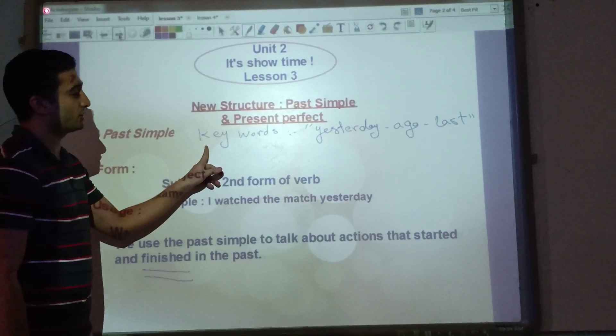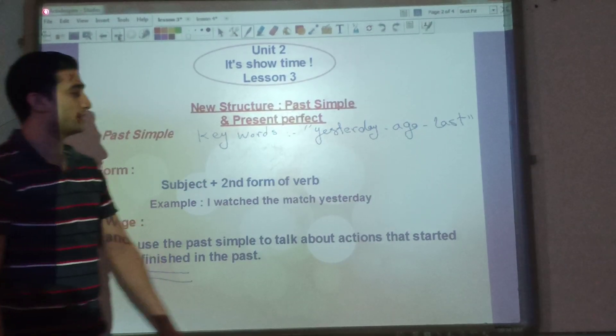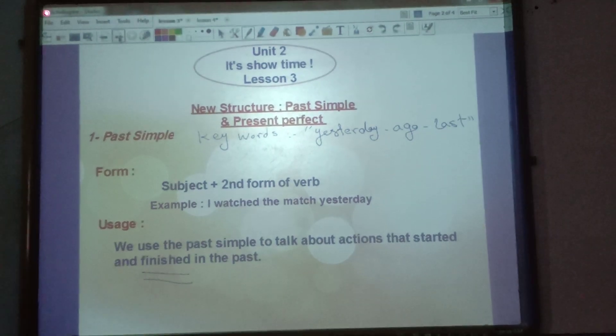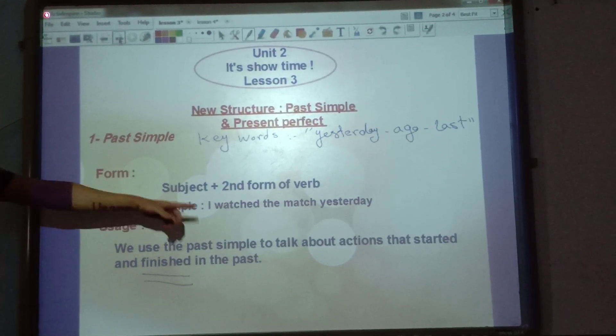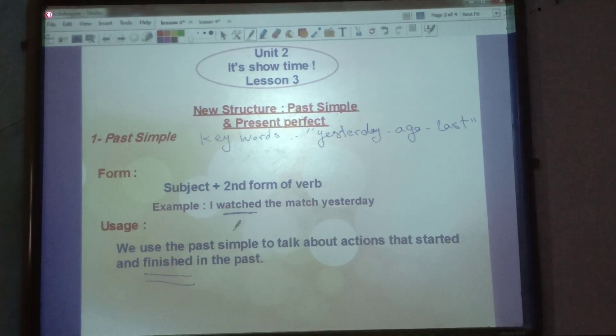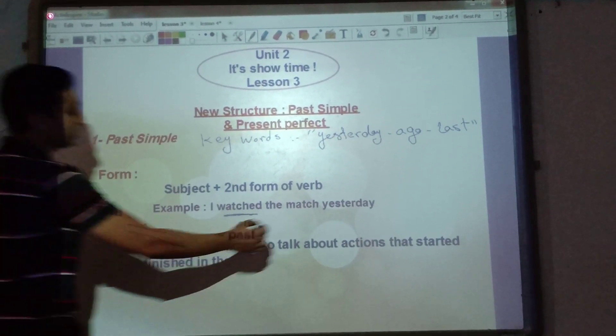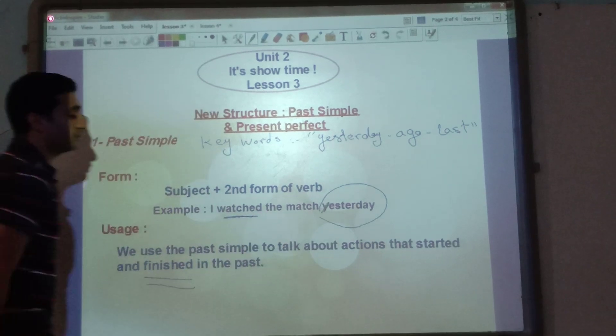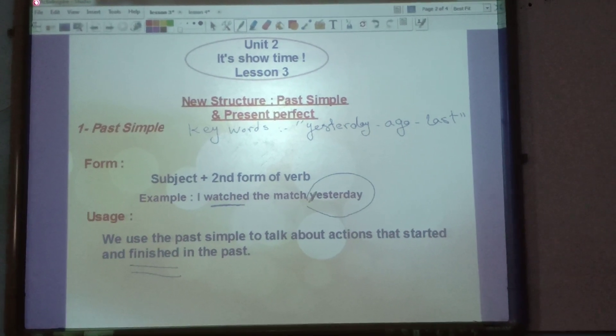The keywords are yesterday, ago, and last. So we said if you see yesterday, ago, or last, it means we use the past. Like 'I watched the match yesterday.' So we use the second form of the verb and here is the keyword yesterday. I watched the match yesterday.